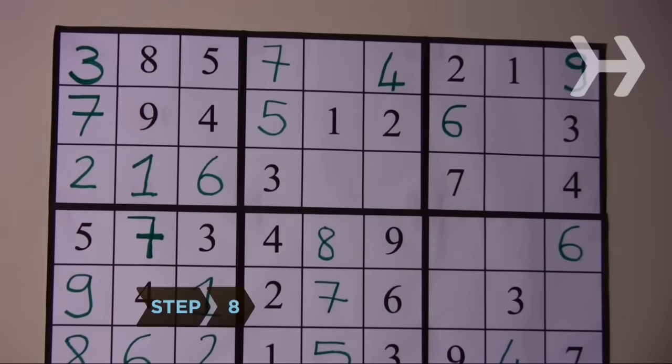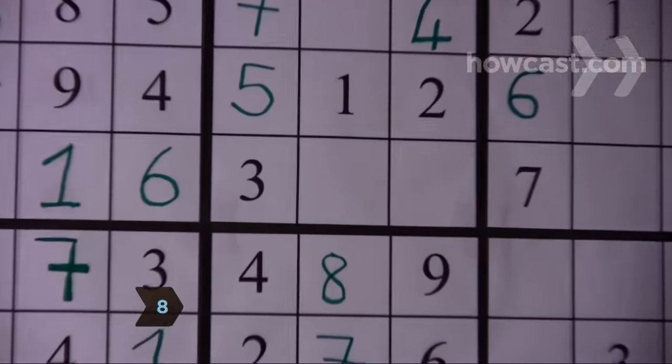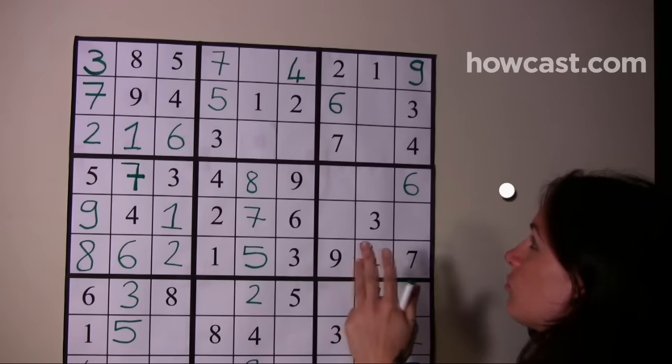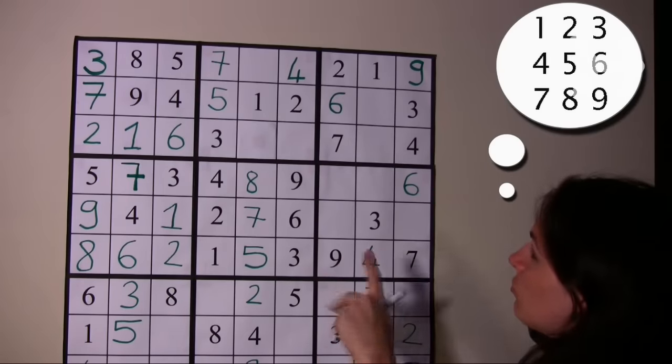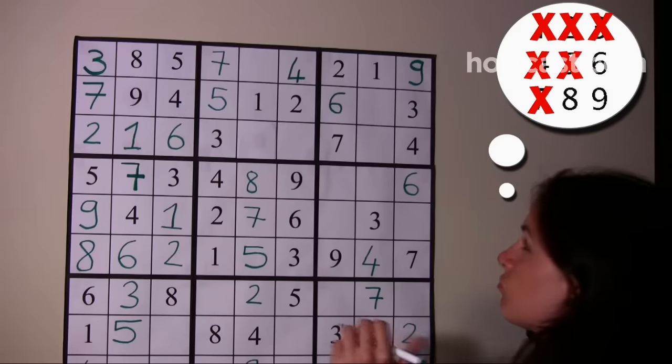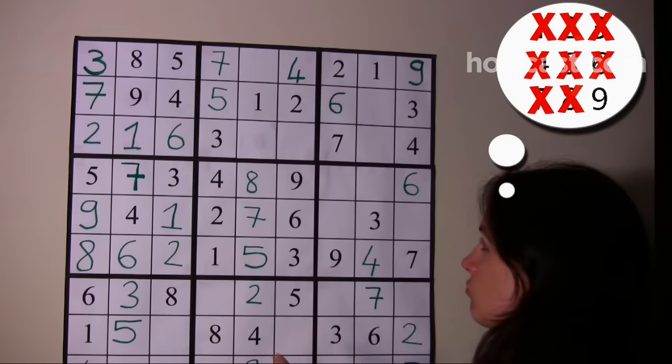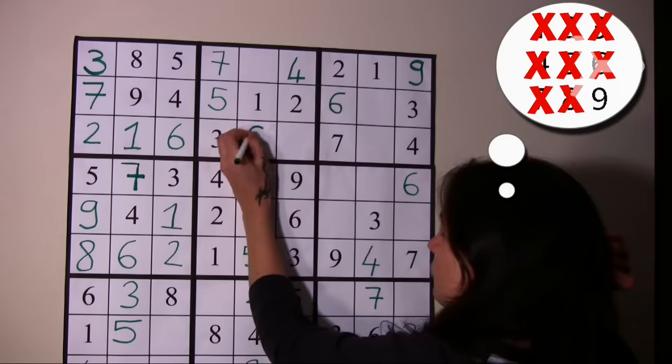Step 8: After crosshatching, try the counting method. Look at a single square and count one through nine through all possibilities, marking off ones that are immediately disqualified because they already appear in the same box, column, or row as the empty square.